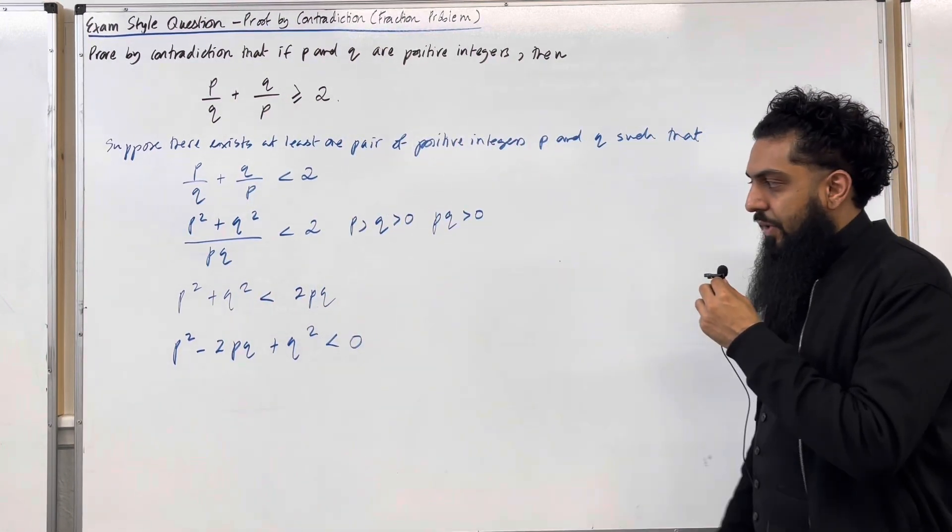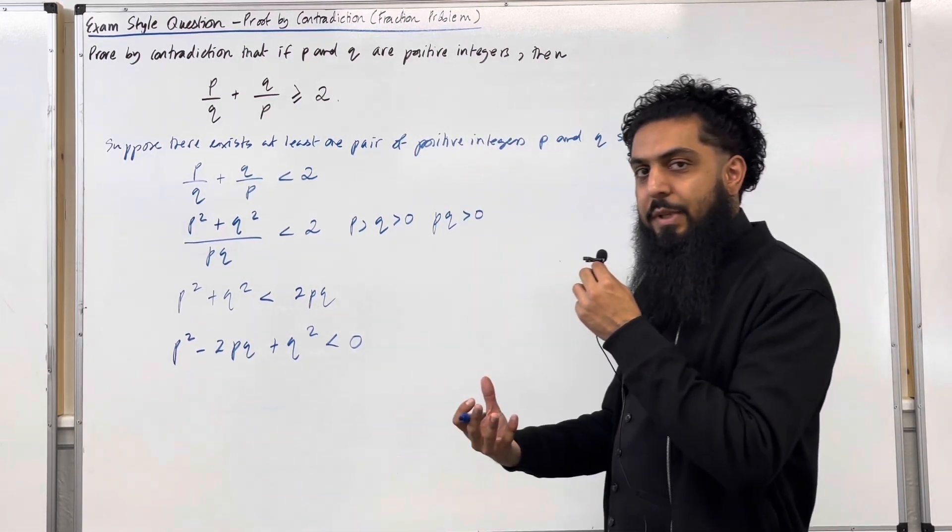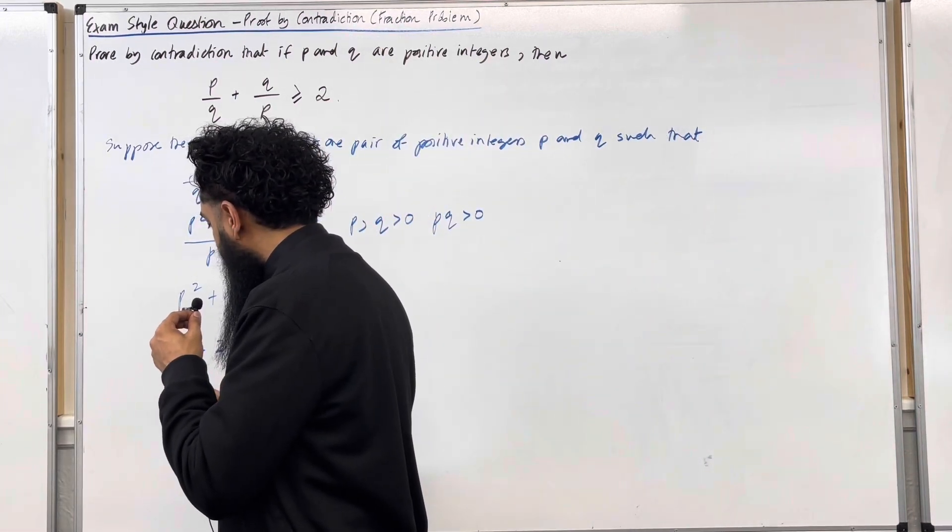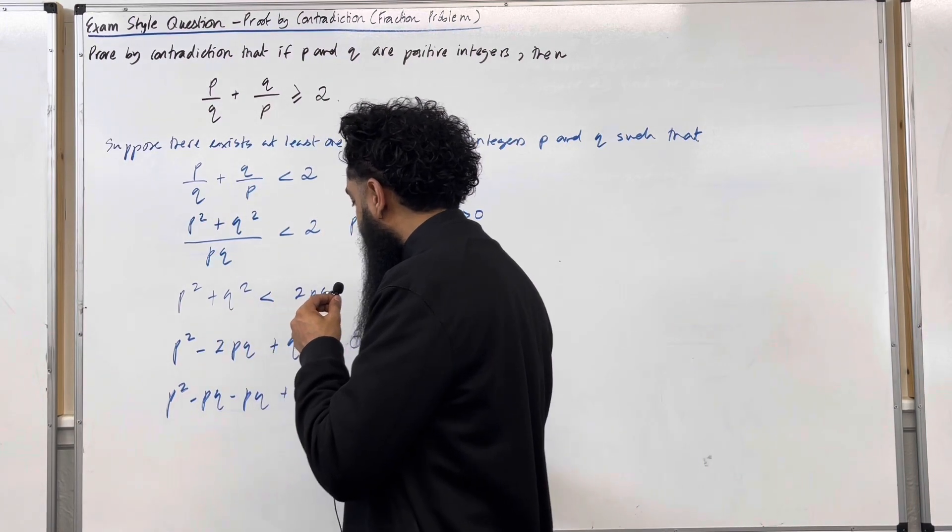I'm going to factorize this. But before I do this, I can split the minus 2pq into minus pq minus pq. So I've got p squared minus pq minus pq plus q squared is less than 0.